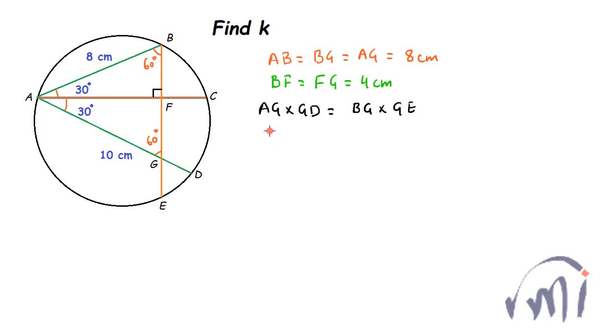So AG is 8 centimeters, GD is 10 minus 8, that is 2 centimeters and this is equal to BG which is 8 centimeters, AB is equal to BG is equal to AD multiplied by GE. So from here you will get GE is equal to 2 centimeters.